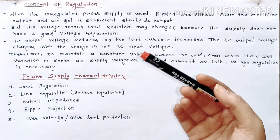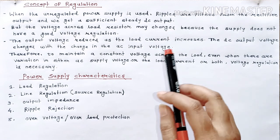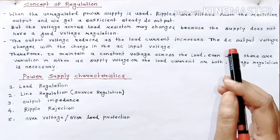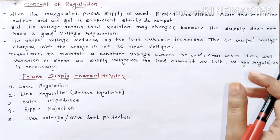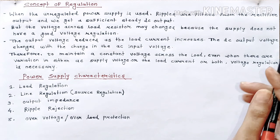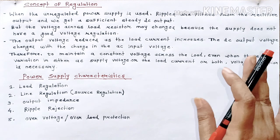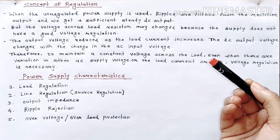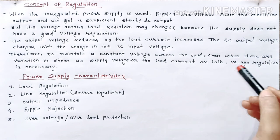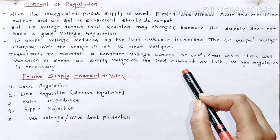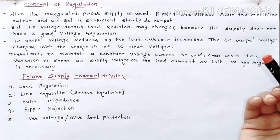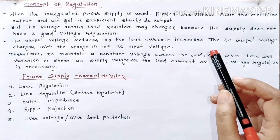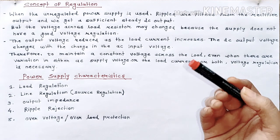So why is there a need of regulation? First of all, the output of the rectifier, or you can say the output of the filter, is a steady output — not a perfect steady output. There is a presence of some ripple, but we can say the DC output we got is reasonably good. But because of some factors still affecting the DC output, such as a change in output because of the change in current flowing through the load resistance, and second, a change in supply voltage.